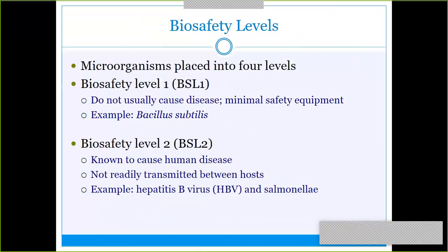Going back to the very beginning of microbiology, we know there are biosafety levels — four of them. Most bioterrorism organisms are going to need to be at level three or higher, but some are biosafety level two. Biosafety level one is basically anything that doesn't really cause much harm or disease. A great example is Bacillus subtilis, a common normal flora of the skin that otherwise doesn't do much.